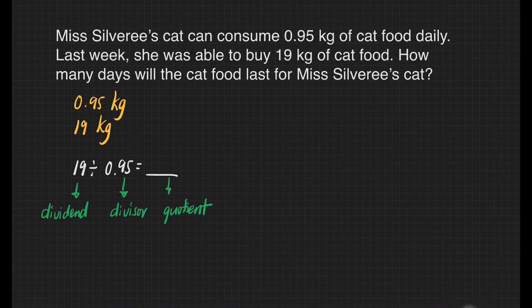We have some rules in dividing a whole number by a decimal. In dividing a whole number by a decimal, it is easy if the divisor is changed first to a whole number. We can just move the decimal points of the divisor and the dividend by the same number of places. Then divide as you do with whole numbers.